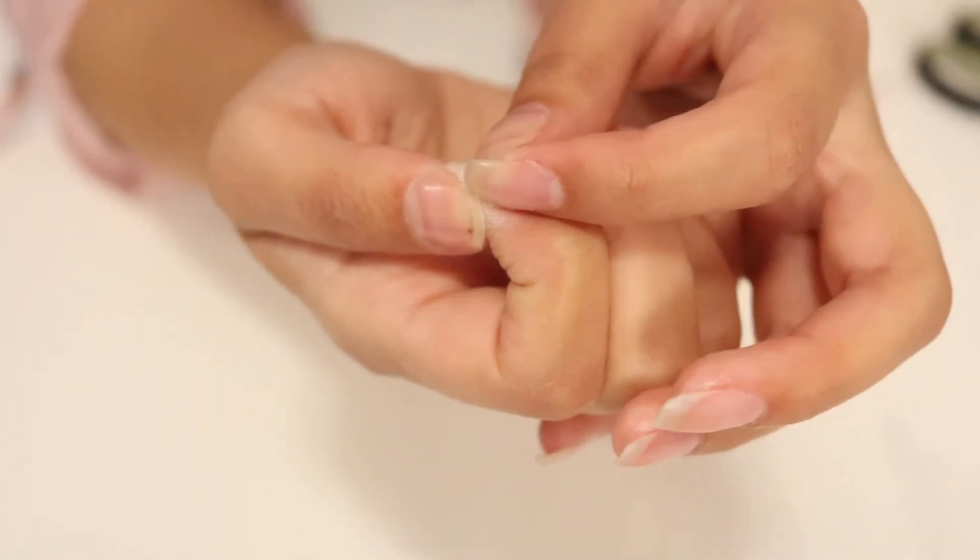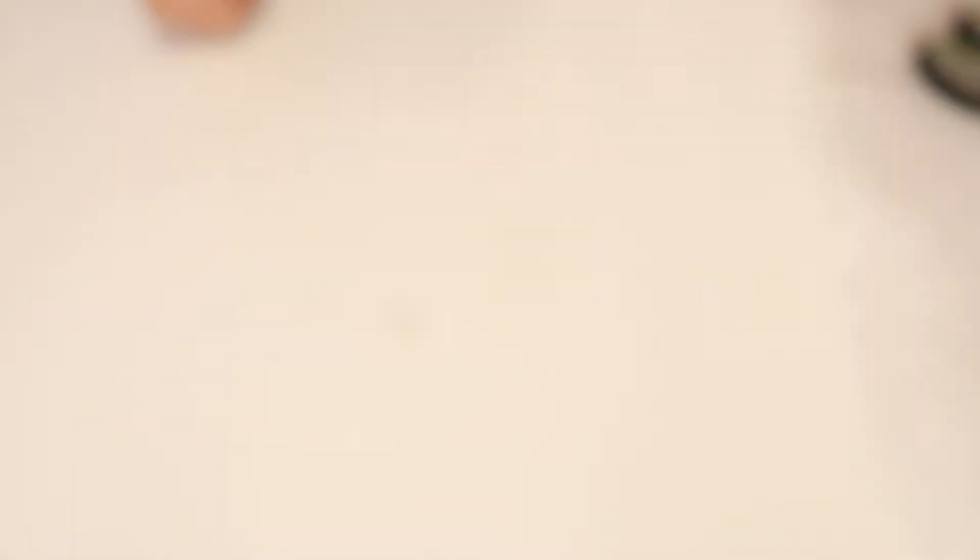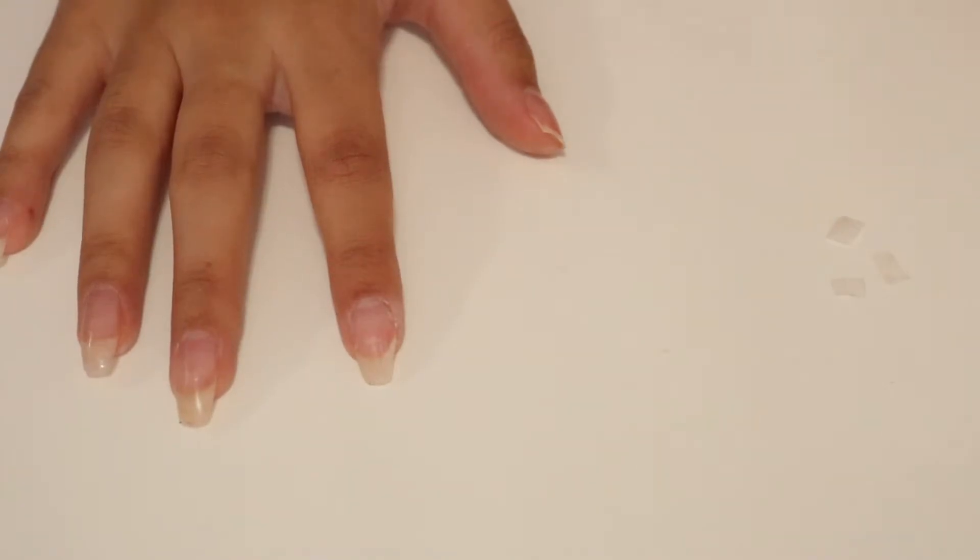So I did decide to place these little pieces vertically on my nail just because it made more sense to me. And just so it's easier to pick up the little pieces, I did use tweezers.